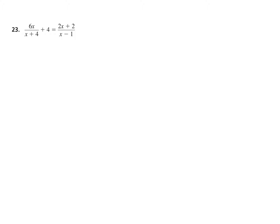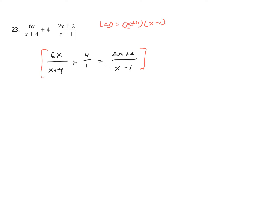Again, very similar to the last one — I do not have an equation showing two fractions equal, so I'm not in cross-multiplying form. I'm going to write it in rational form, giving the 4 a denominator: X plus 4 over quantity X plus 4 plus 4 over 1 equals 2X plus 2 over quantity X minus 1. Next step is to identify the LCD. The LCD is quantity X plus 4 times quantity X minus 1.